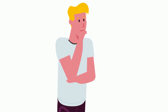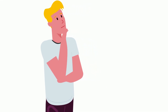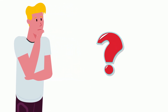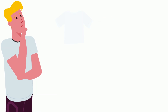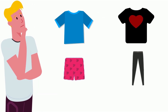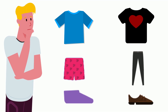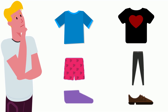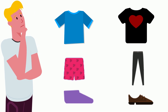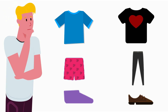John has a problem. He needs to figure out what he's going to wear to school today. He needs to decide his type of shirt, the pants he's going to wear, and then the type of shoe. So how many total choices does he have, and what's the probability of his unique outfit?